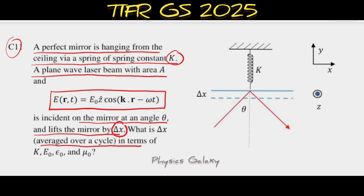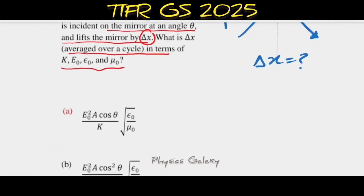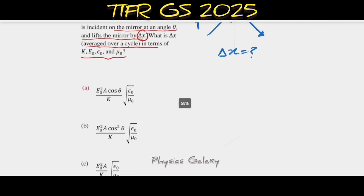Light is coming at an angle θ and getting reflected back from this mirror. The mirror is suspended via a spring with spring constant K. Because of the pressure exerted by this beam, it is being lifted by an amount Δx. We need to find what Δx is. These are our options, so let's start.